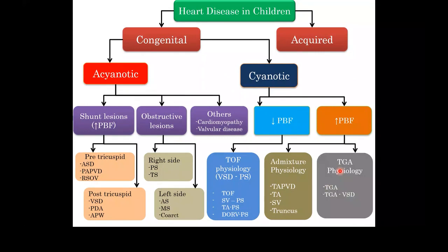The third physiology is TGA physiology — transposition of great arteries, with or without a ventricular septal defect. All cyanotic heart lesions can be categorized into these three physiologies: TOF physiology (reduced pulmonary blood flow, no heart failure), admixture physiology (increased pulmonary blood flow, heart failure possible), and TGA physiology. All these children are blue but the physiology and management differ.